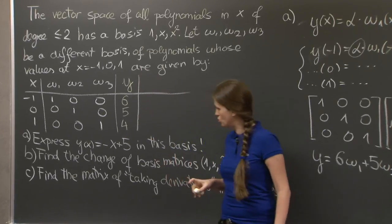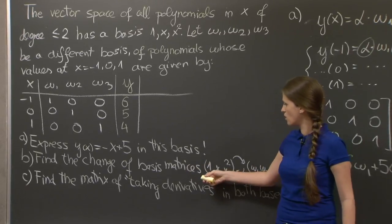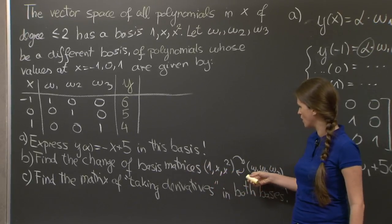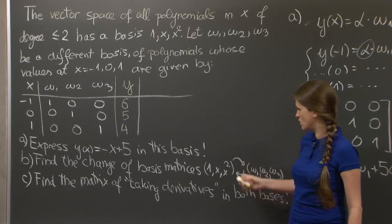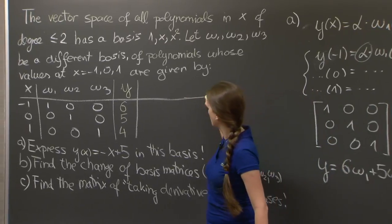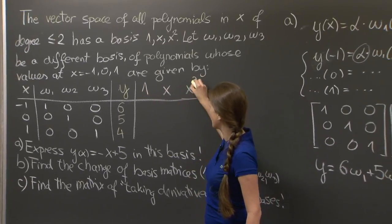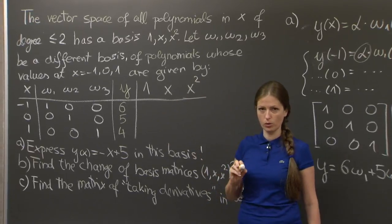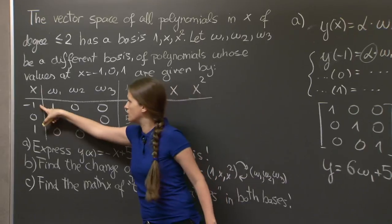And that's already a hint to solving the b part, which is find the change of basis matrices between 1, x, x squared and w1, w2, w3. Change of basis matrices means expressing one basis in terms of another. So as part of the problem, we will have to express 1, x, and x squared in terms of w1, w2, and w3.